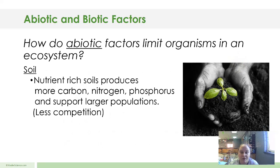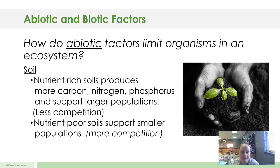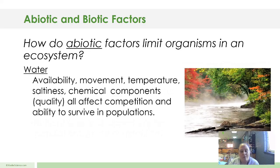Soil is another factor. Nutrient-rich soils produce more carbon, nitrogen, and phosphorus and support larger populations — less competition for plants to survive. Nutrient-poor soils support smaller populations, so they have to compete to survive. Water: availability, movement, temperature, saltiness, and chemical components like the quality of water all affect competition and the ability to survive in populations. The better the water, the greater the ability for populations to survive — and also the greater the competition. And vice versa if the water is damaged or not as pure.